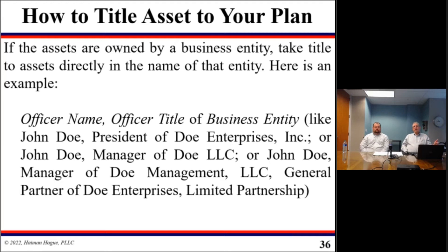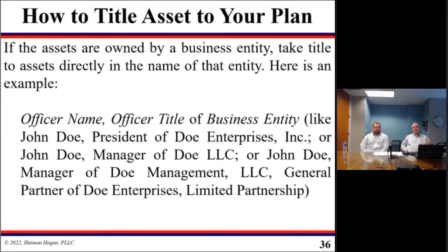Now, what if the assets are in a business entity? You can take title directly in the name of that entity. For example: officer name and officer title of the business entity — like John Doe, President of Joe Enterprises Inc., or John Doe, Manager of Doe LLC, or John Doe, Manager of Doe Management LLC, the general partner of Doe Enterprises Limited Partnership. It's simpler than the trust format — you're only dealing with the officer name, their title, and the business entity.